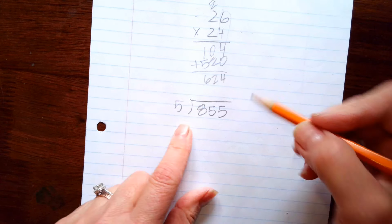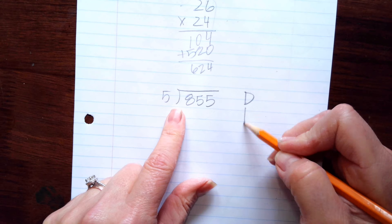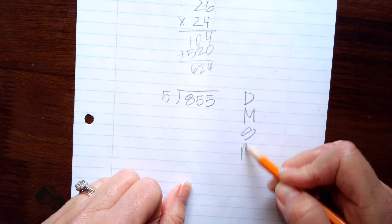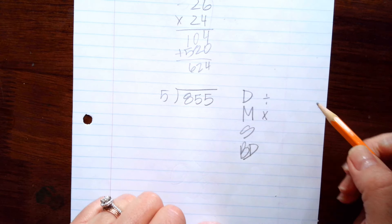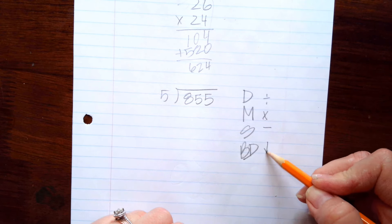Okay, so our steps are daddy, mommy, sister, brother, dog. This stands for division. This stands for multiplication, subtraction, and bring down.